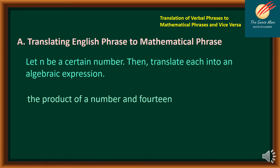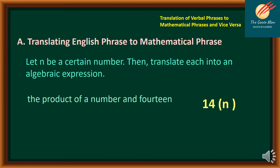Let's have another example: "The product of a number N and 14." The product translates to the multiplication symbol. The number is N, and we have 14. We arrange this as 14 times N. However, in algebra, instead of using parentheses, we can juxtapose 14 and N simply as 14N, which means multiplication. Therefore, the product of a number and 14 can be translated as 14N.